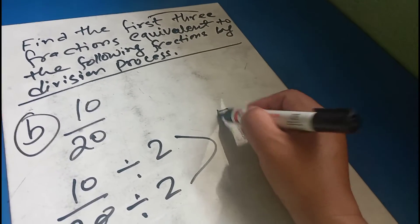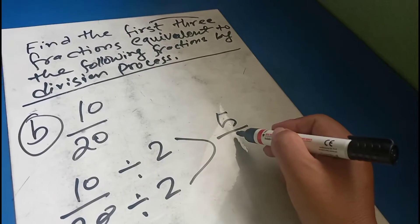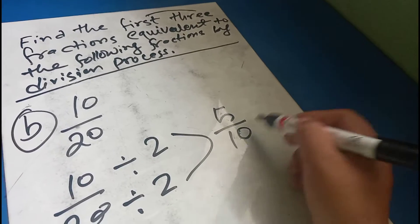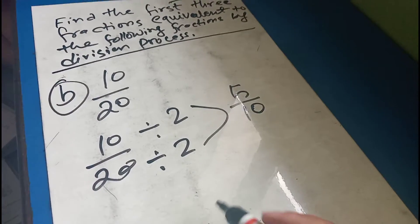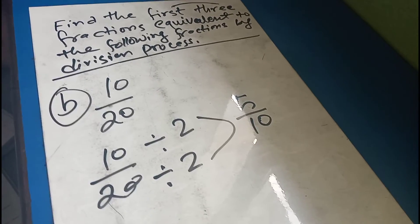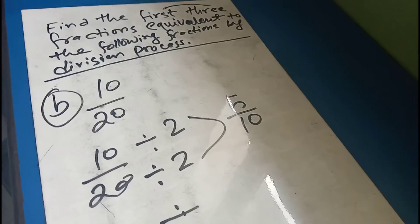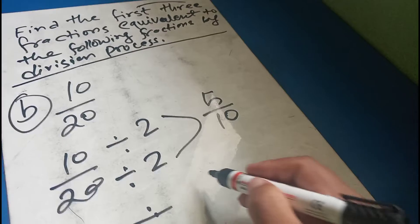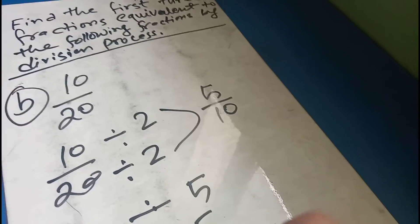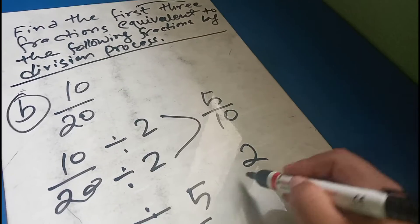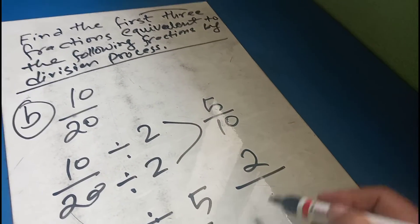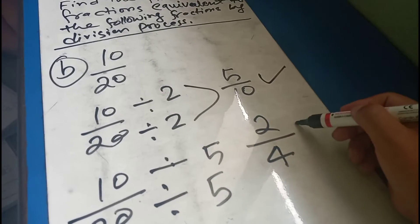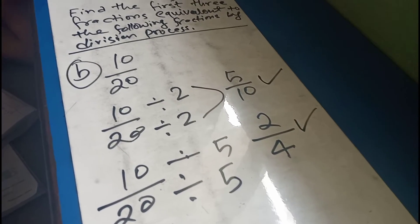2, 5, 10, and 2. 20. 10 by 20. 10 by 20. 5. 2. 0. 20. First fraction and then we will go.